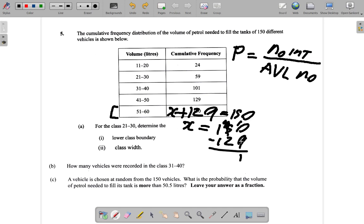That's 21. 21 of them. So, there are 21 vehicles recorded in the 51 to 60 class.